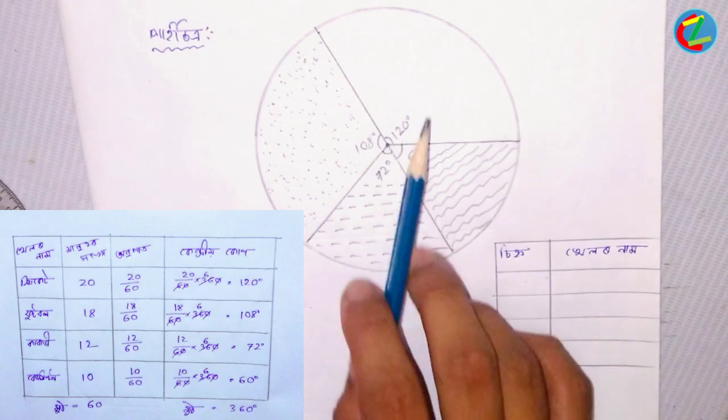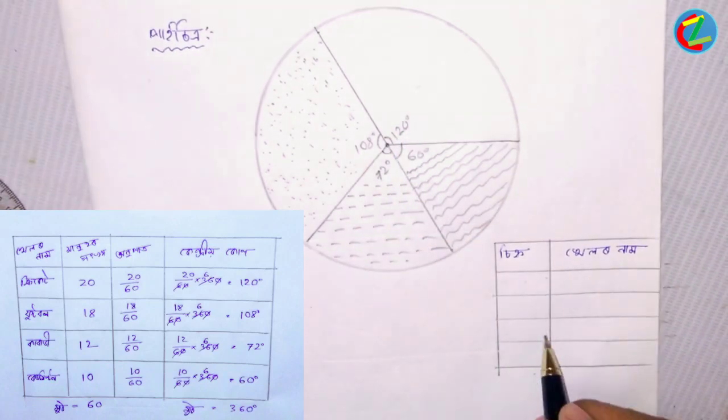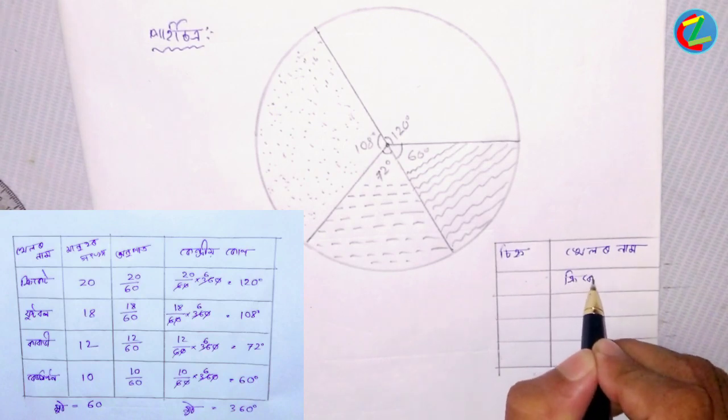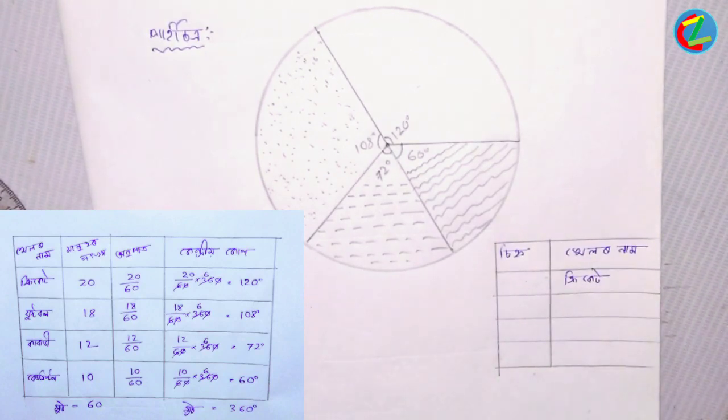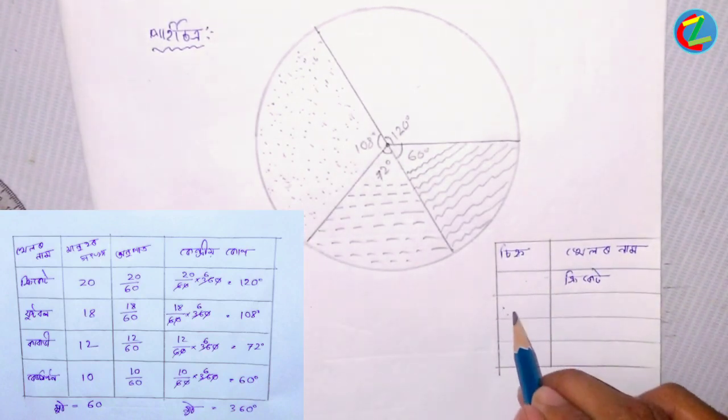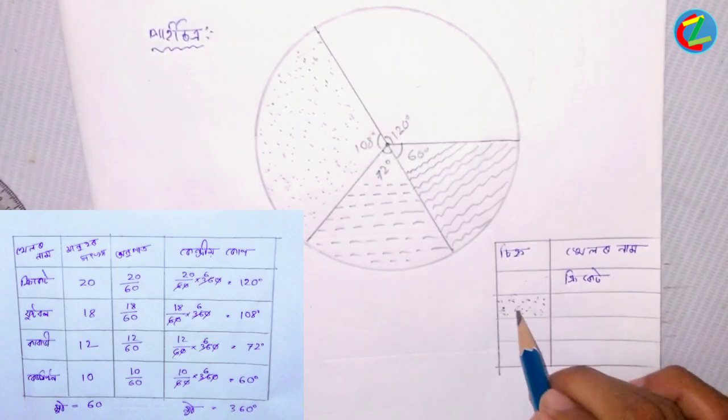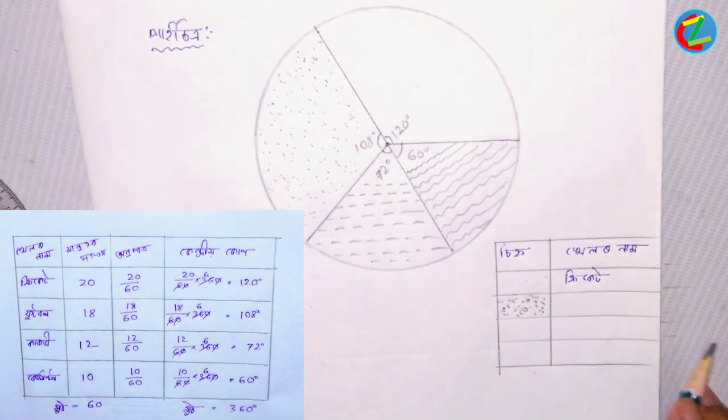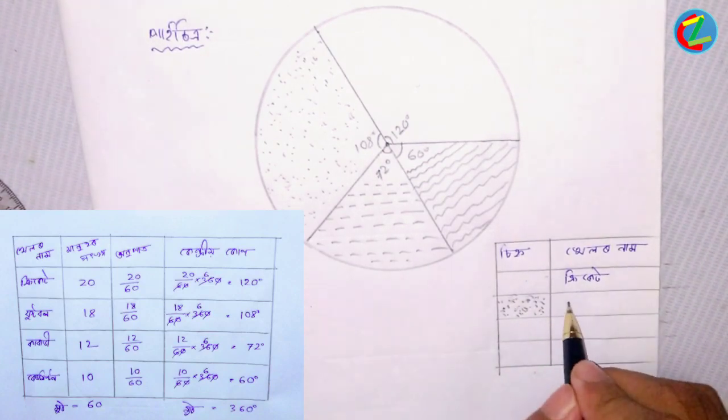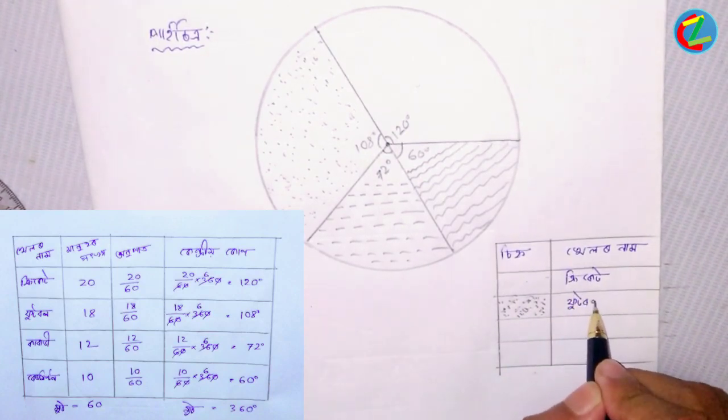For cricket, I'll mark this section. For football, I'll get the proper degree. The football section goes here, and I'll mark it accordingly.